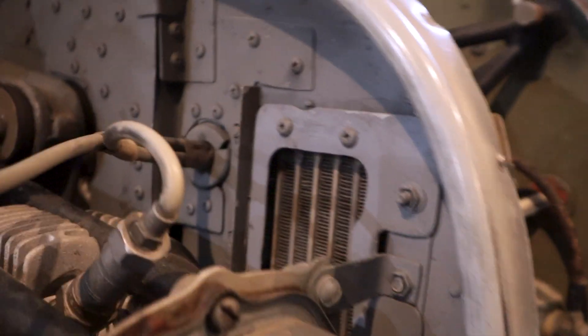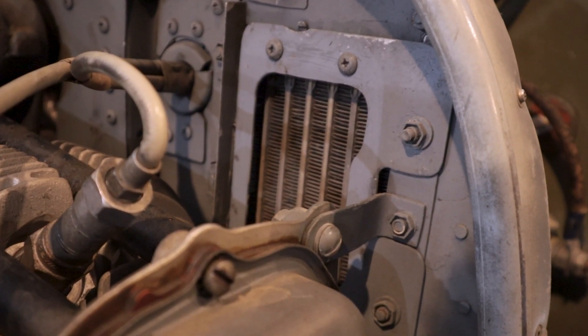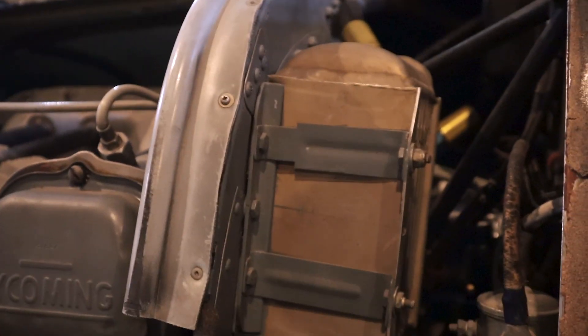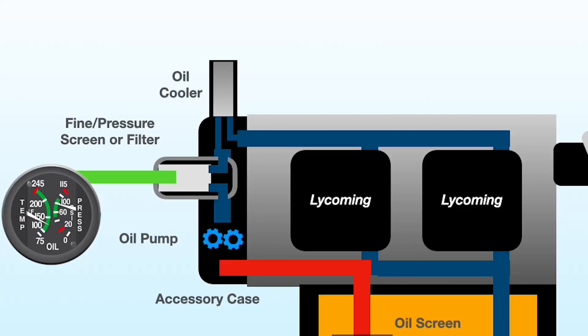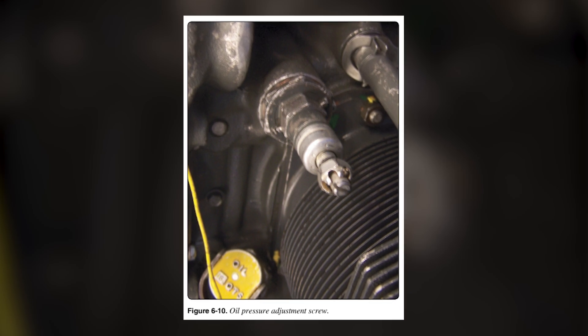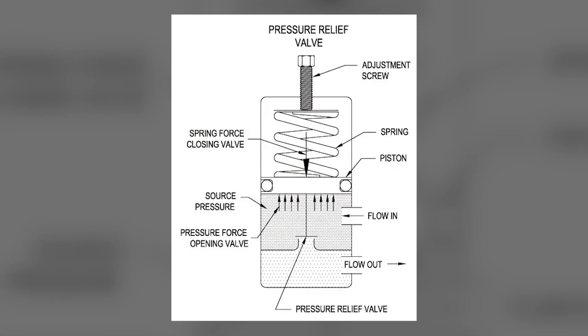Here is my oil cooler. You can see where it's mounted right behind the last cylinder on the left side of this engine. You can also see how air passes through these little cavities here and then passes through the back side of it. It's drawn out the bottom of the cowling. Oil flows in up at the top, is pushed down through to cool off, and then taken to the engine from there. Most aircraft engines also include an oil pressure relief valve, which is used to regulate the maximum pressure experienced in the oil system. This prevents damage to critical components in the oil system and acts as a safety mechanism for the engine.